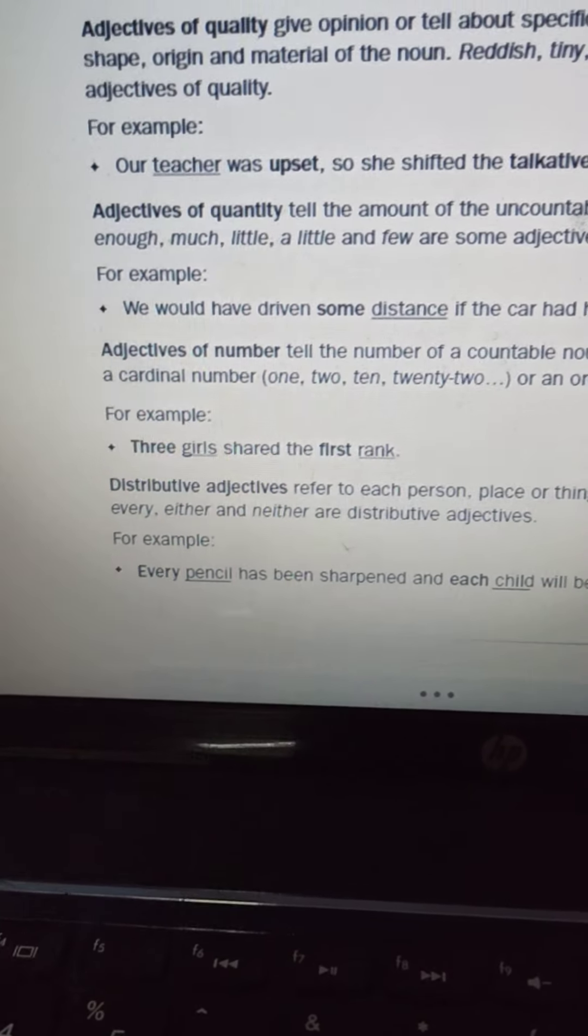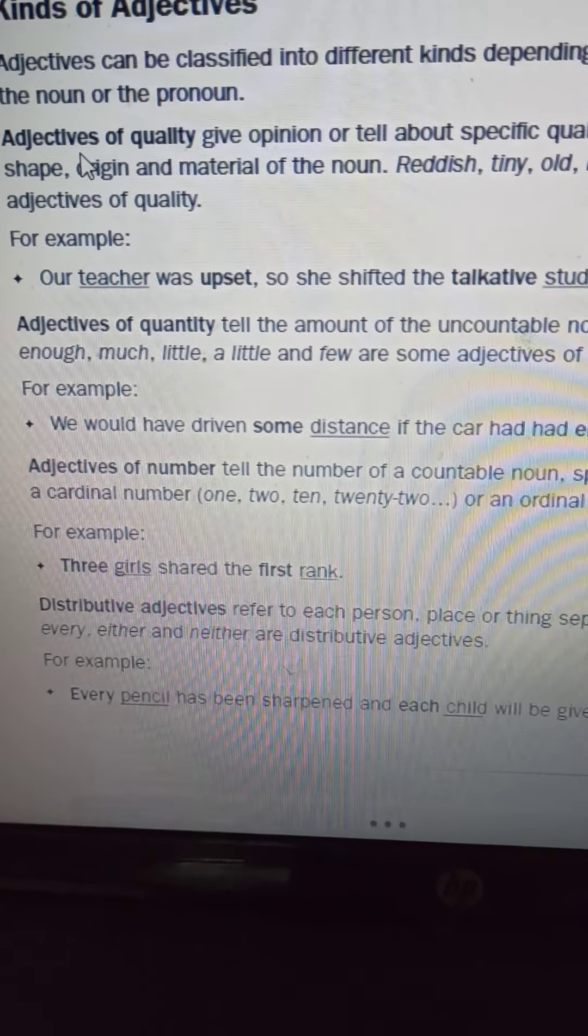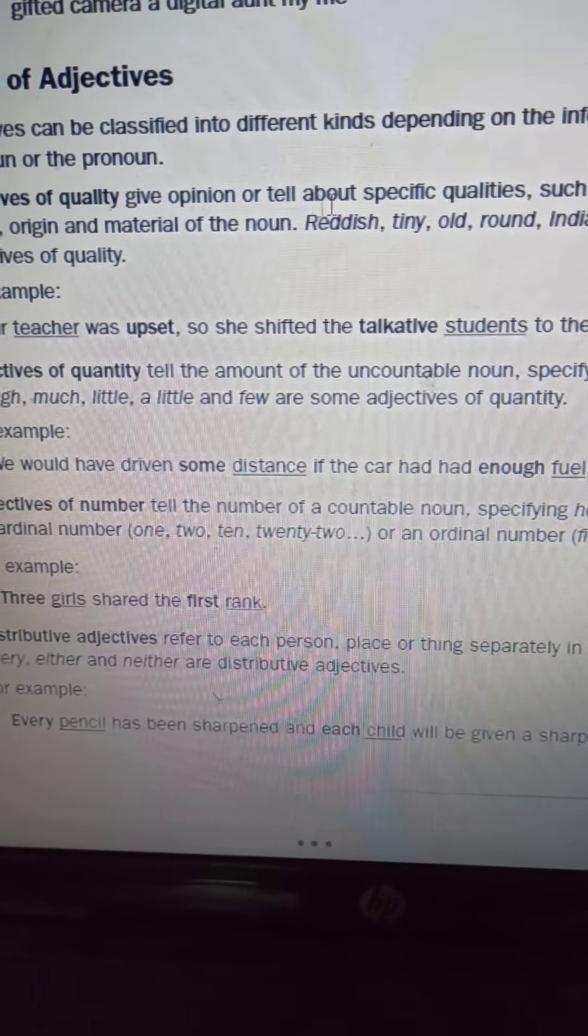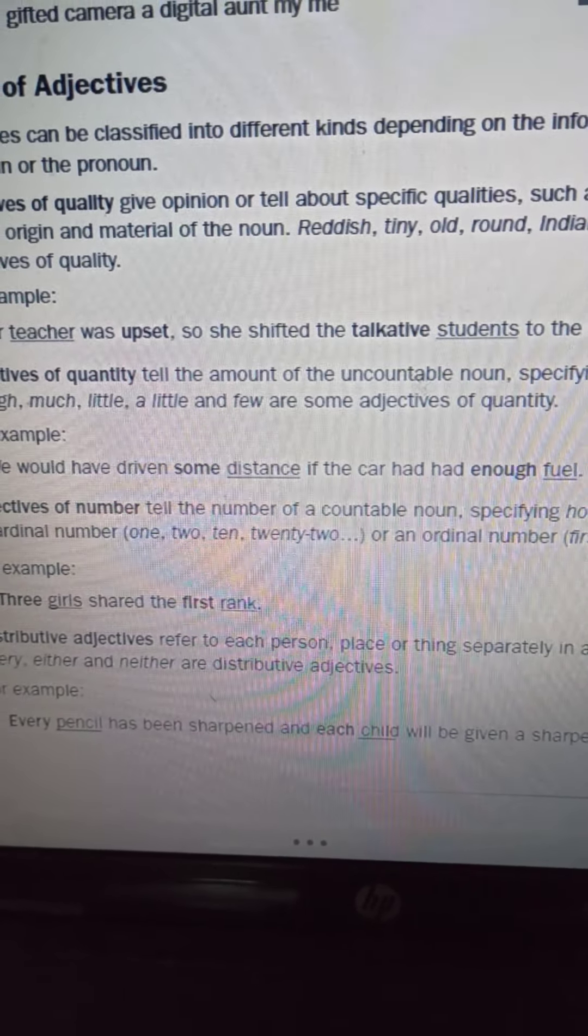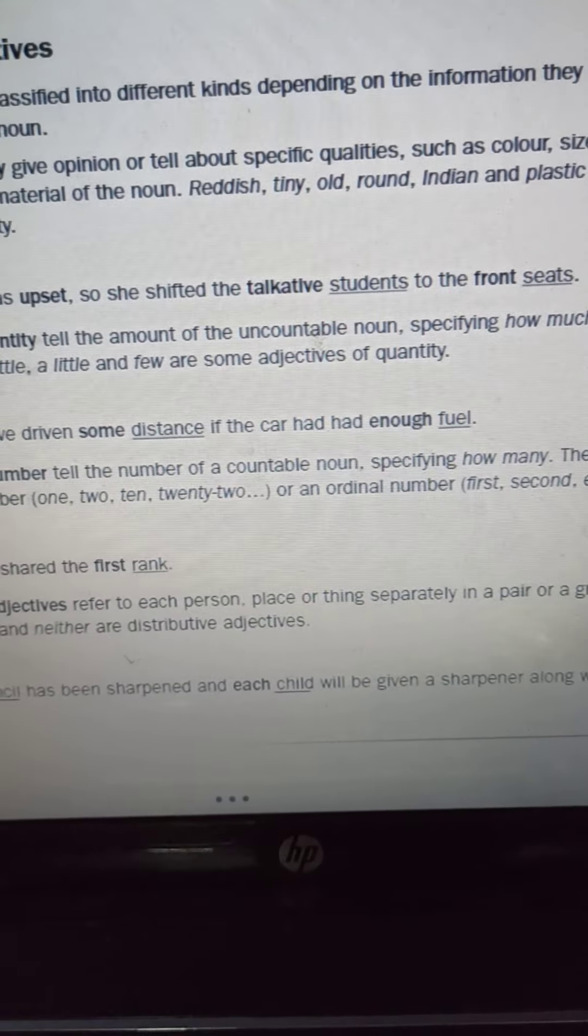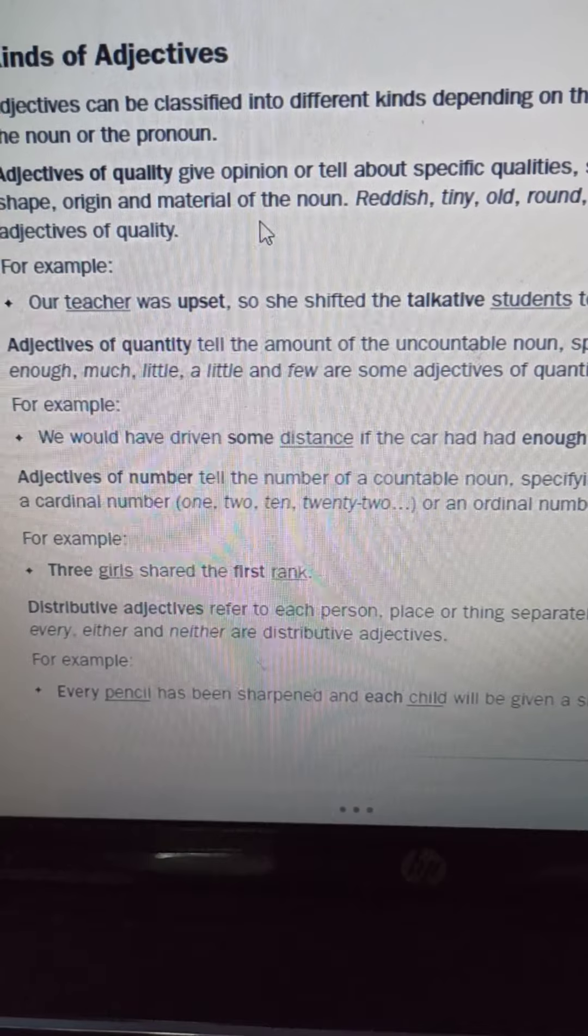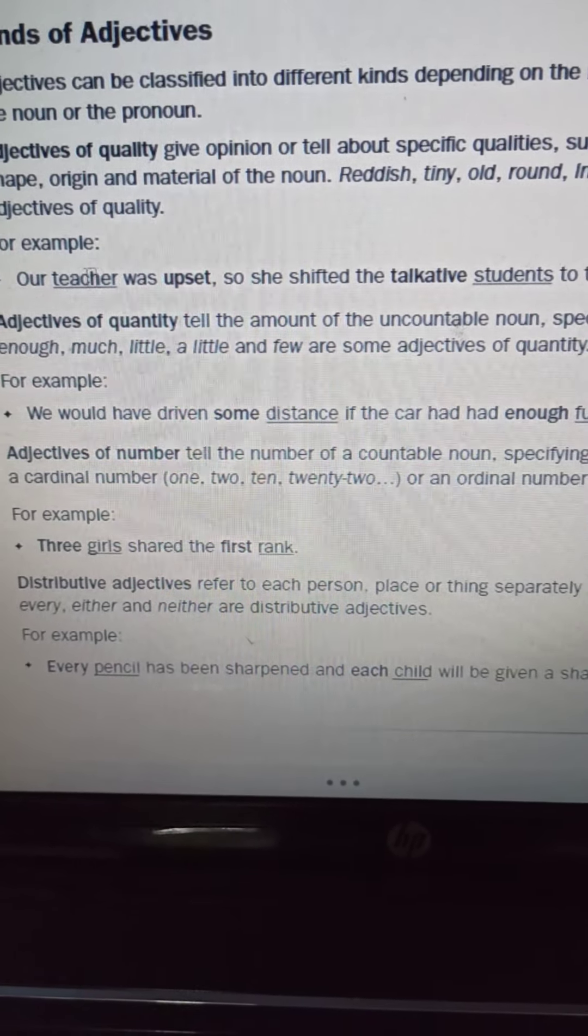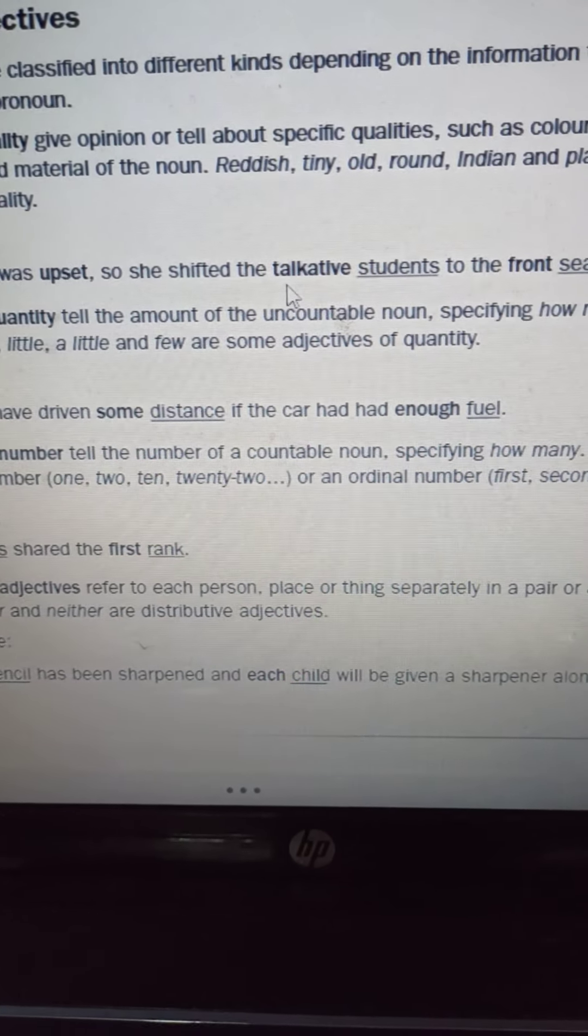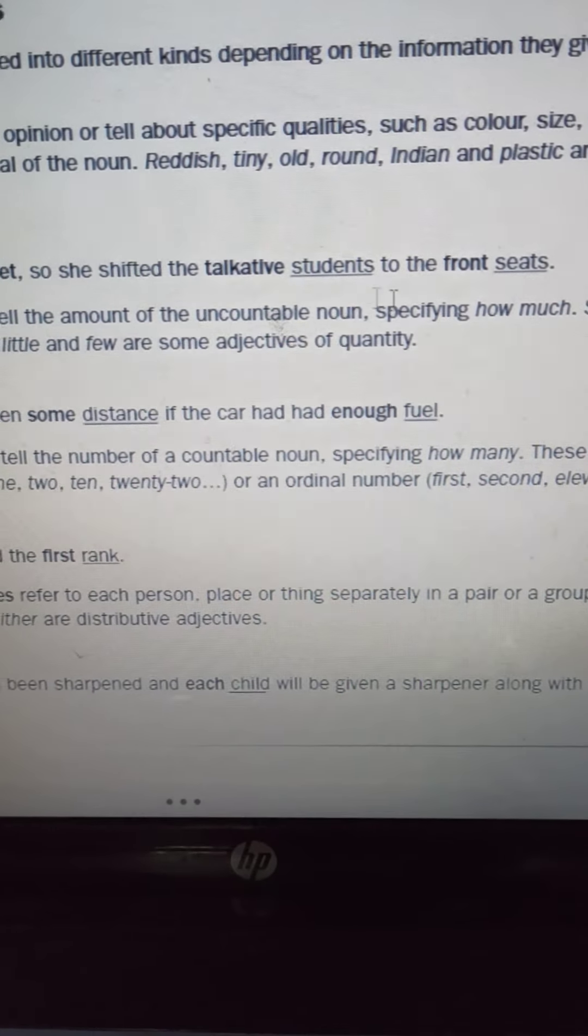So it gives us opinion, it tells us about specific qualities such as color, size, age, shape, origin and material of the noun. For example, a teacher was upset, so she shifted the talkative students to the front seat. Talkative, front, upset - these are all your adjectives of quality.